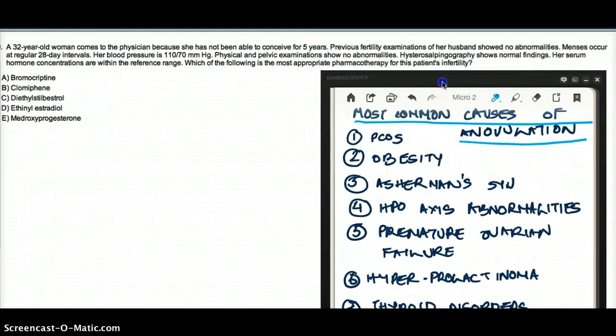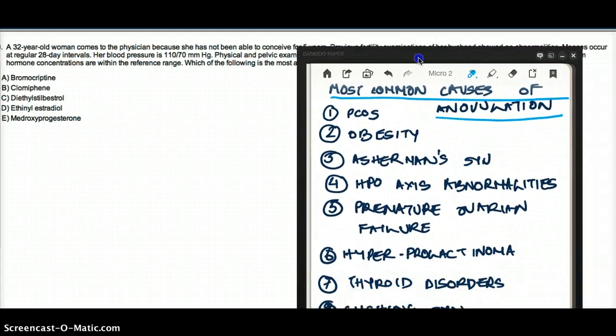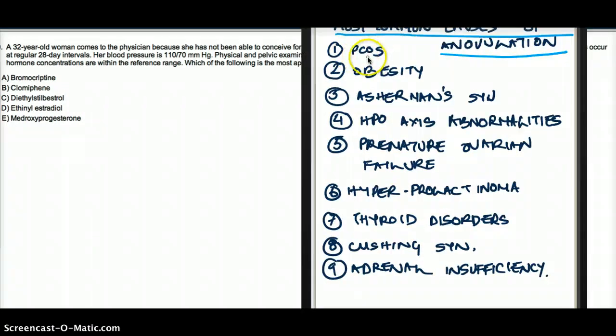Now here I listed some of the common causes of anovulation. They are PCOS, obesity, Asherman syndrome, HPO axis abnormalities, premature ovarian failure, hyperprolactinoma, thyroid disorders, Cushing syndrome, and adrenal insufficiency. So let's rule them out one at a time.